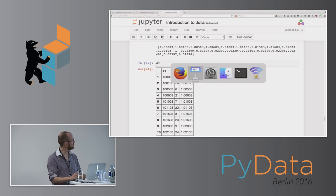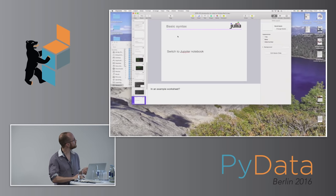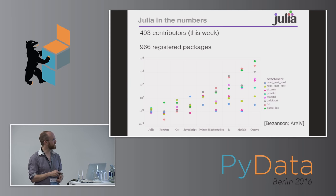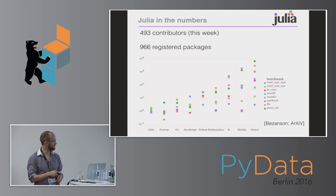Switching back to slides: Julia is working pretty well. There are 493 contributors to the core as of this week, and 966 registered packages. On the benchmark chart, one here represents C speed (10 to the zero). Julia clusters around C-type speeds. Fortran is typically faster than C with one outlier where it's slower. Python is roughly one order of magnitude slower than C on most typical programming functions.